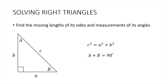This is derived from the fact that the sum of all angles in a triangle — so in this case we have A plus B plus 90 degrees — should be equal to 180 degrees.